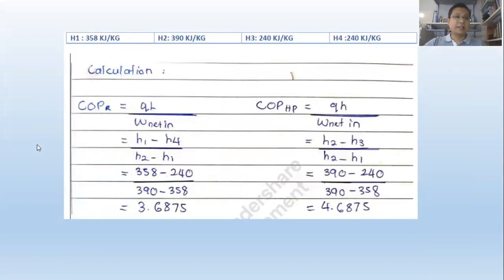Then we can calculate the COPR and COPHP from the formula. As we know, the formula mentioned about the enthalpy. It should be found the enthalpy. How to define the enthalpy? The enthalpy should be mentioned for refrigeration type. What temperature? And then we can plot the H enthalpy.